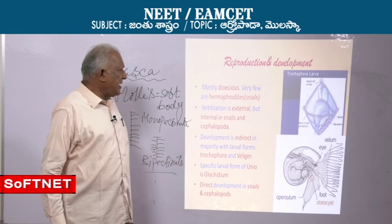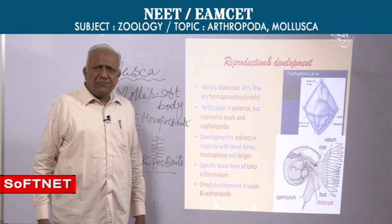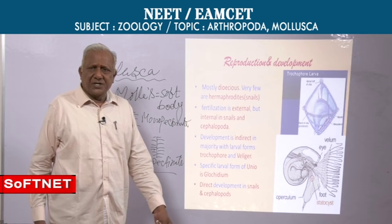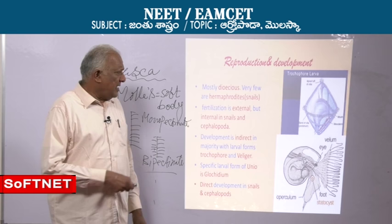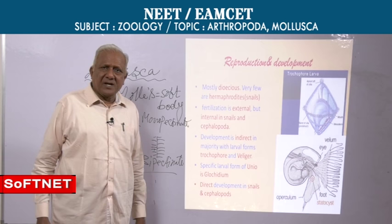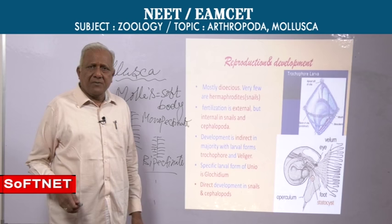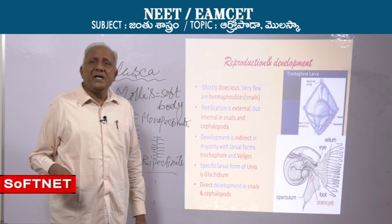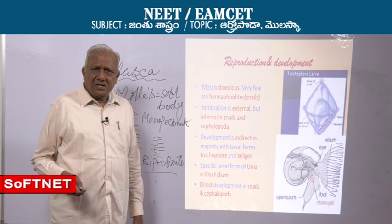Now coming to reproduction and development. Mostly unisexual; very few are hermaphrodites. Dioecious — sexes are separate. Fertilization is external. Then mostly indirect development. There are two larval forms: trochophore and veliger. The first larva is the trochophore.